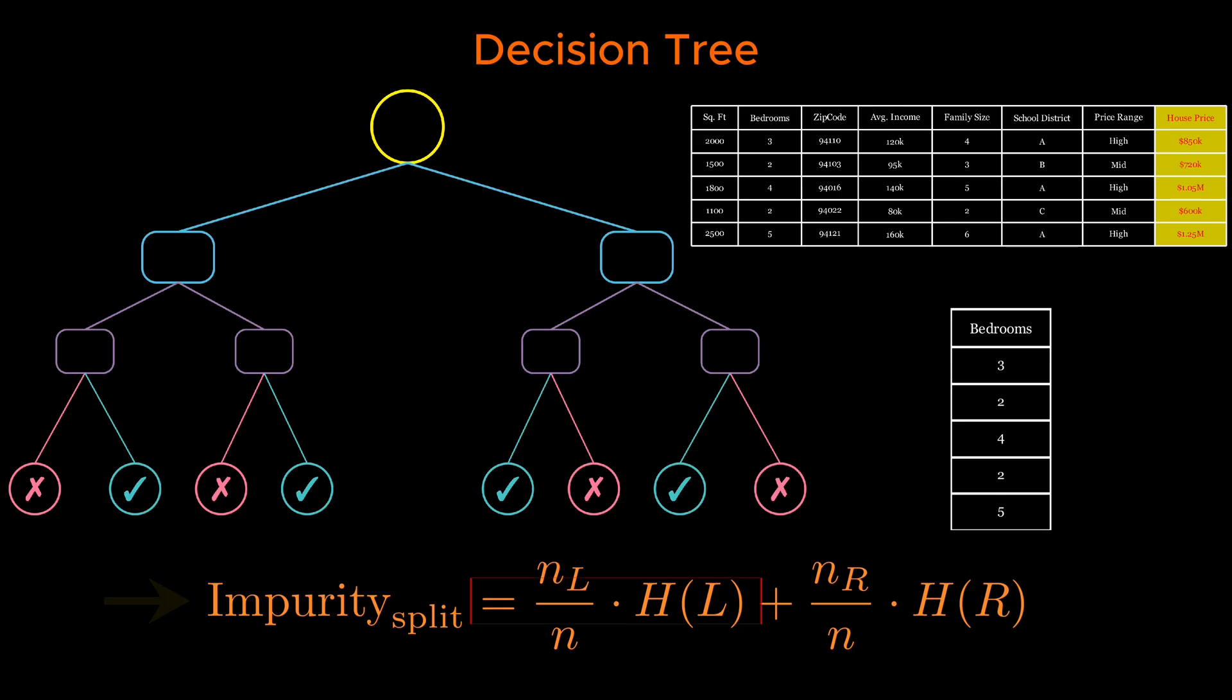We test this split for each unique value of each feature and keep record of the total entropies of the prospect child nodes. The split that results in the lowest weighted entropy is selected. That feature and threshold become the decision rule at that node. We will find the rest of the decision rules by repeating this splitting process for each child node, building the tree downward until we reach pure leaf nodes, low entropy subsets where all samples share the same class.